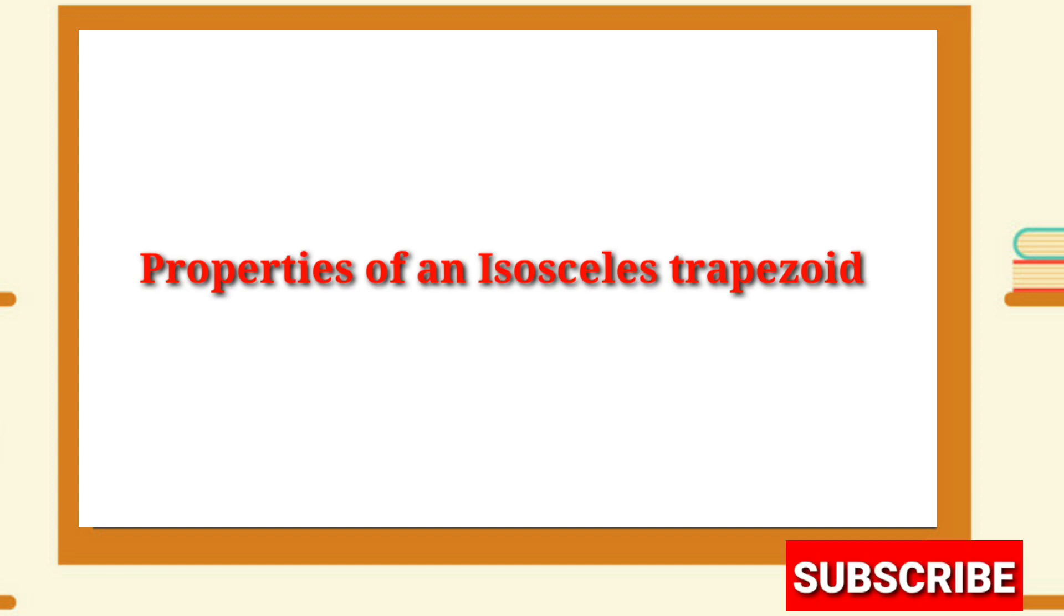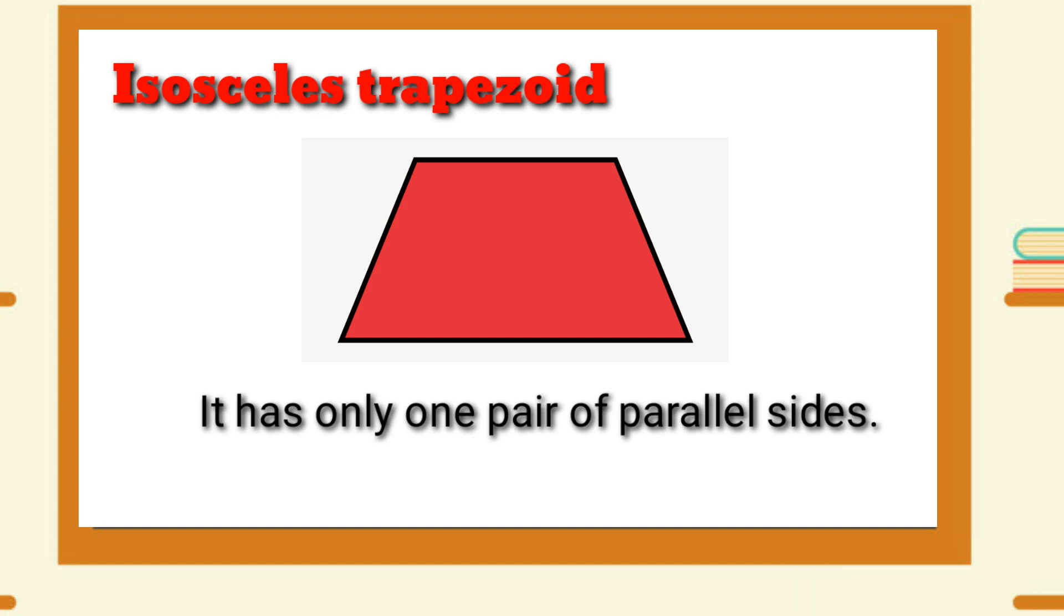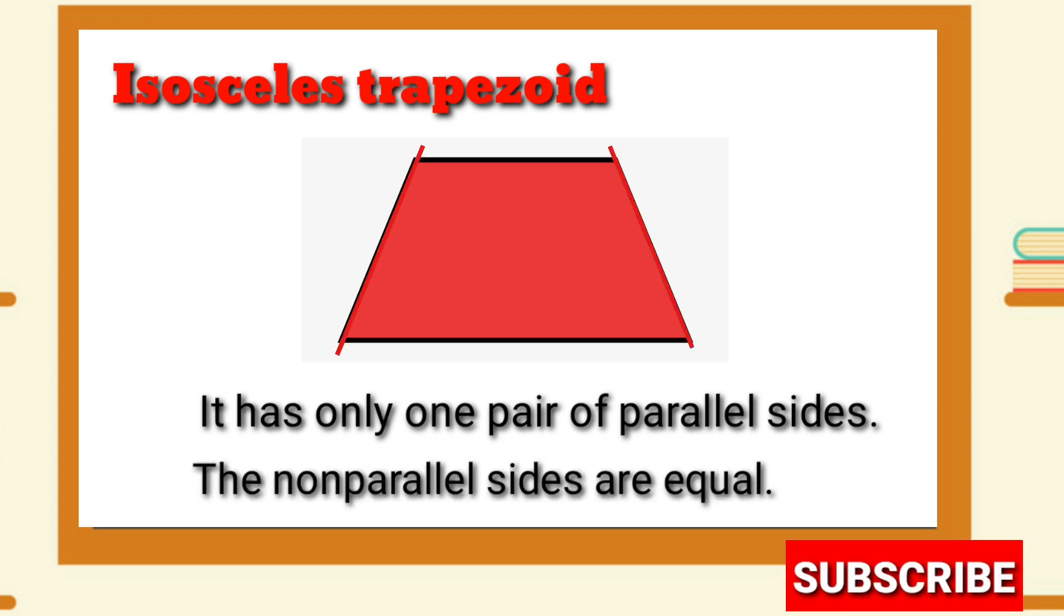Properties of an Isosceles Trapezoid: It has only one pair of parallel sides, and the non-parallel sides are equal.